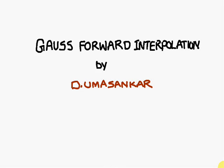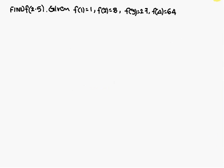Today we are going to discuss Gauss forward interpolation. Find f of 2.5, given f of 1 is equal to 1, f of 2 is equal to 8, f of 3 is equal to 27, and f of 4 is equal to 64.